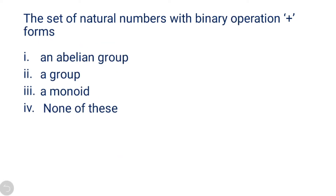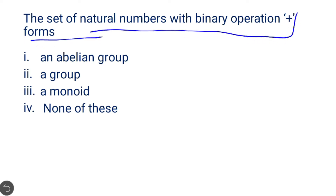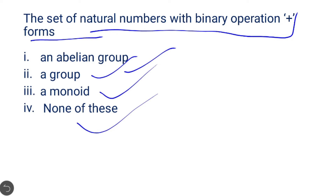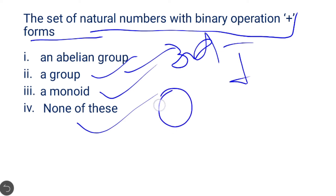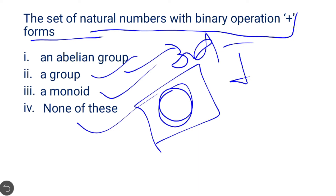Next question: the set of natural numbers with a binary operation forms — an abelian group, a group, a monoid, or none of these? The set of natural numbers is not an abelian group and not a group because it doesn't satisfy the existence of an identity element: 0 is the additive identity but it is not a natural number. It is also not a monoid since it does not have an identity element. It is a semi-group, which is not given in the options, so the correct answer is option 4.